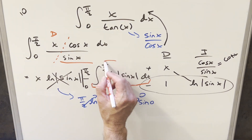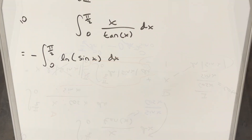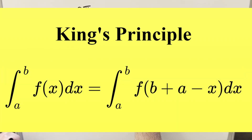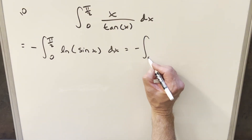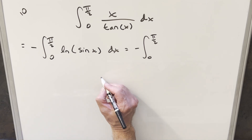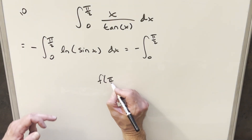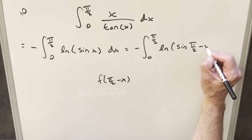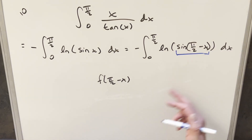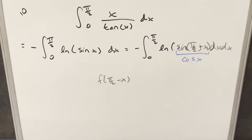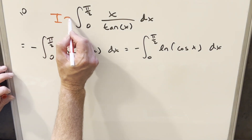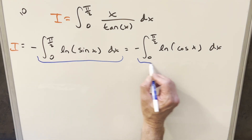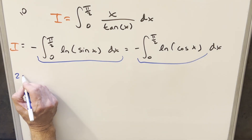Let me clean up the board and focus on the remaining integral, making sure to include the minus sign in front. Now with our bounds going from 0 to π/2 and having the sine here, this is a good case to use King's Principle. Using the formula, the bounds stay the same, and f(b + a − x) just means we substitute π/2 − x for x. So we get natural log of sin(π/2 − x), which is the complementary angle for sine, producing cos(x). If our original integral is i, then this new form is also i. Let's add them together to get 2i.